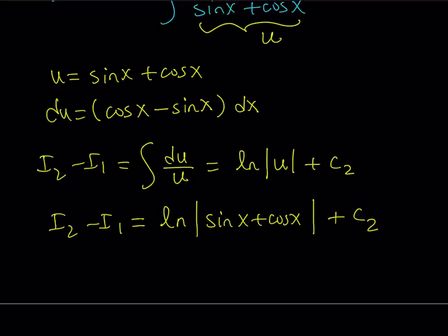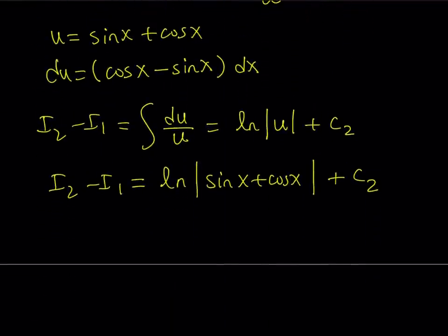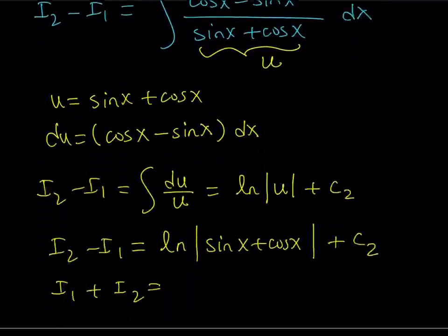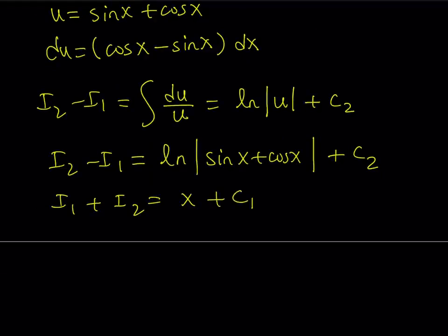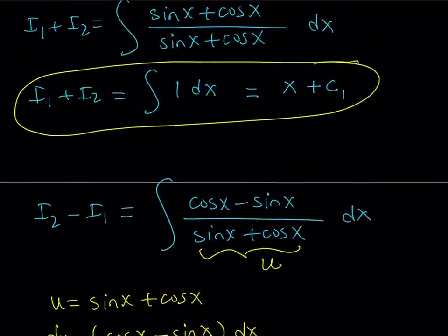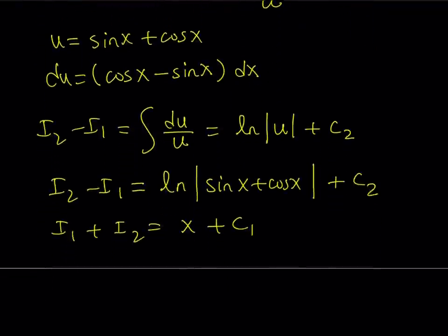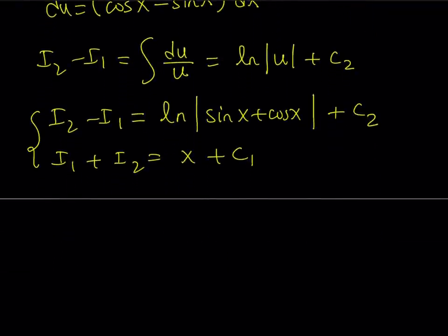Now I got I2 minus I1, and I have I1 plus I2. So I1 plus I2, I found it to be, from here, x plus c1. That was a very easy integral. So this is x plus c1. So what am I going to do with these two equations? Well, my goal is to evaluate I1. Remember, that's our original integral. I2 is something that we invented. We wanted to use it so that they could go well together. So I need to solve for I1. So how would you solve for I1? This is a system of equations. We no longer have integrals, so this should be easy to solve. No more calculus. It's just algebra from now on.